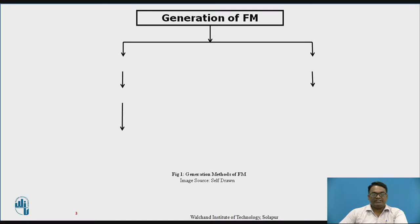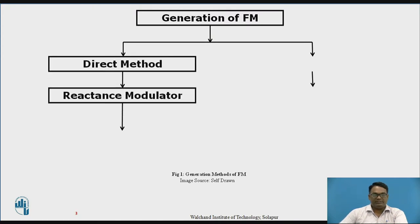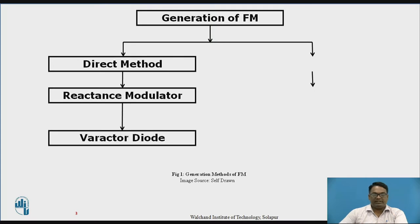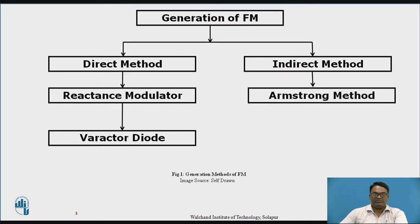First we will see how an FM signal is generated. FM signal generation can be done by two different methods: the direct method, which has two sub-processes — the reactance method and the varactor diode method — and the indirect method, which includes Armstrong's indirect method of FM generation.